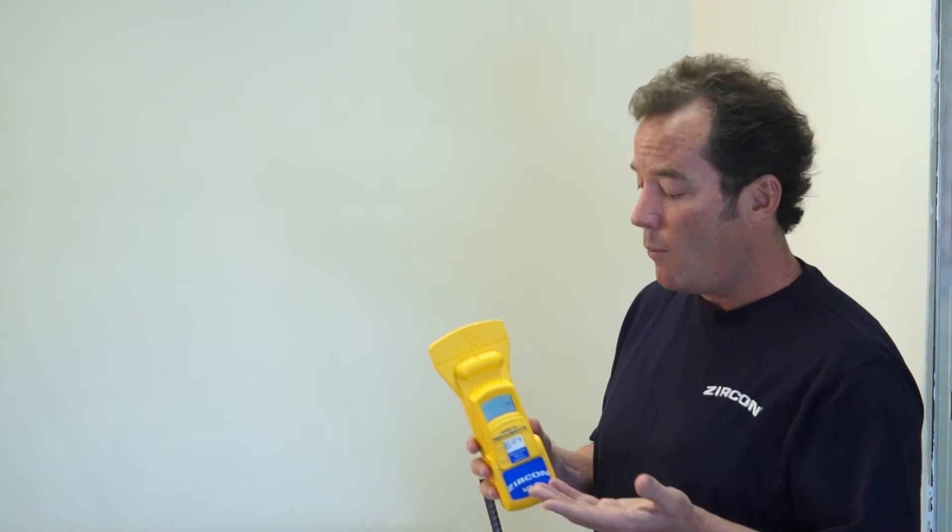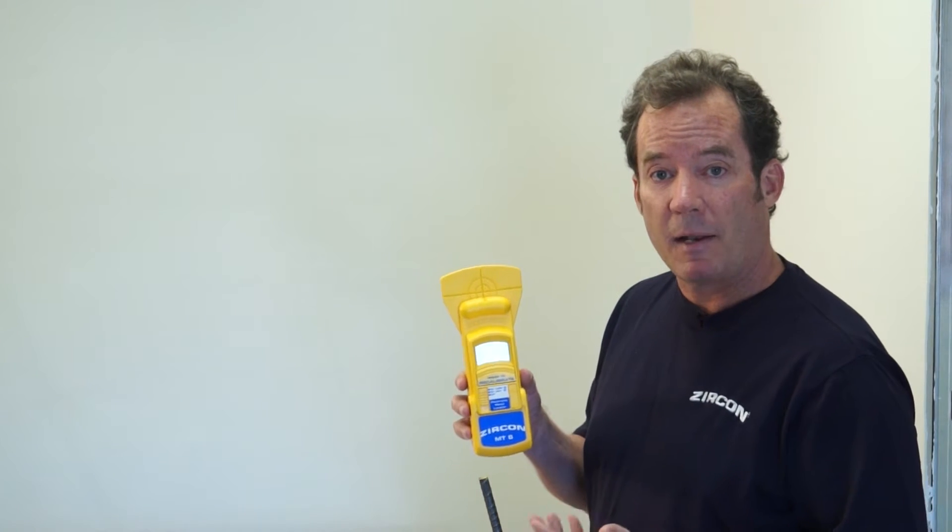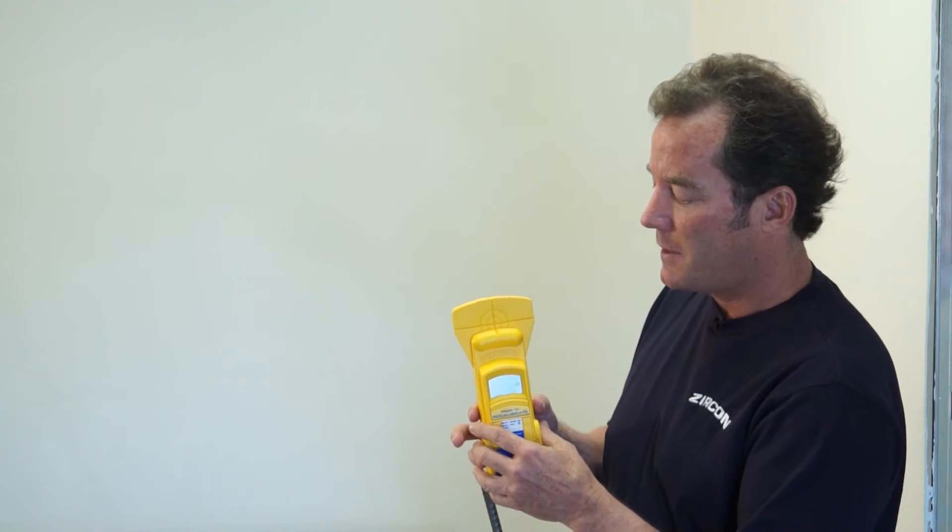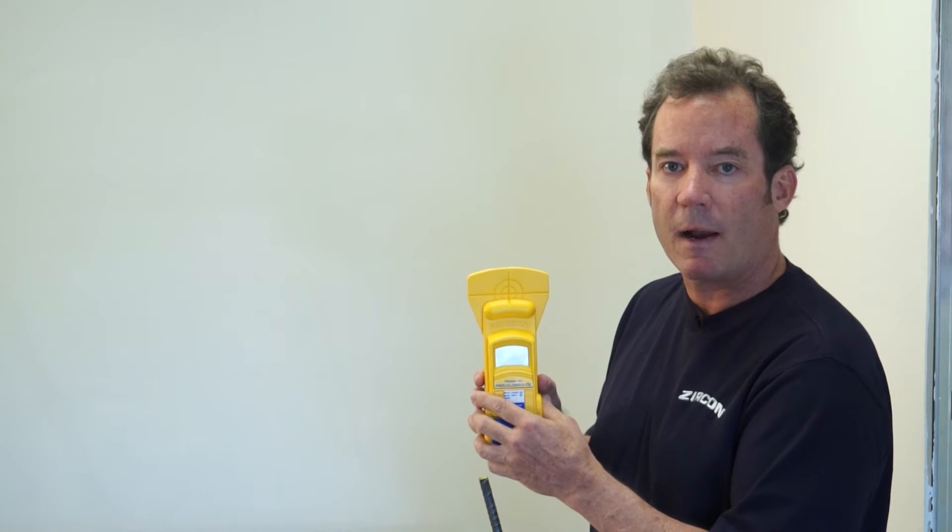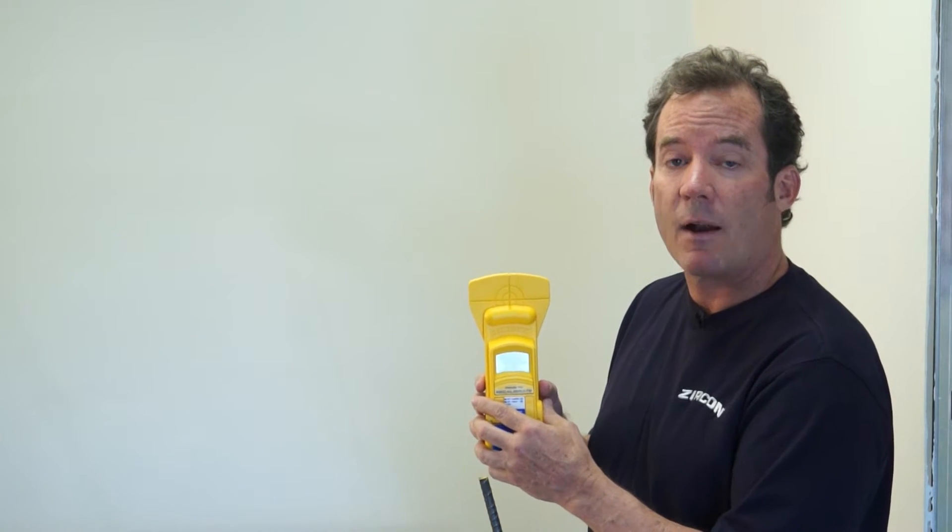Now you may have noticed that some of our multi-scanner stud finder products have a metal scan mode. So you wonder why would I need a dedicated metal detector like this? Well, the difference is that this can scan much deeper for metal. It can give us the depth and also differentiate between ferrous and non-ferrous metal.